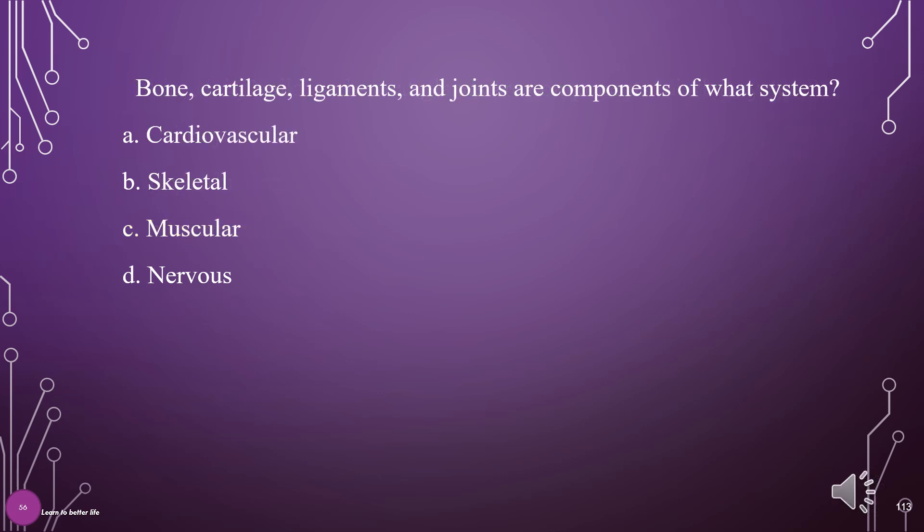Bone, cartilage, ligaments, and joints are components of what system? A. Cardiovascular, B. Skeletal, C. Muscular, D. Nervous. The answer is B: Skeletal System.